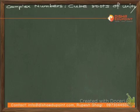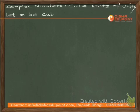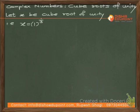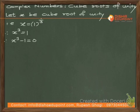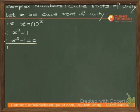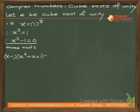In this video we are going to study the cube roots of unity. Let x be the cube root of unity. Unity is equal to 1, so we want to find x = 1^(1/3), which means x³ = 1. So we have the equation x³ - 1 = 0. This is a cubic equation and it is going to have three roots, which are the cube roots of unity.